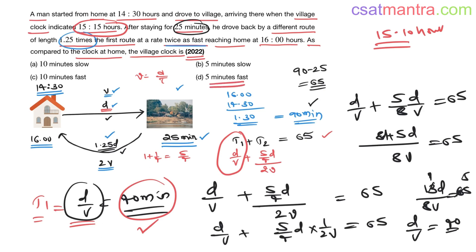Easy question. We know total time is 65 minutes, that is T1 plus T2. T1 is D by V, T2 is 5 by 8 D by V, and we found D by V as 40 minutes. That is time taken from home to village. When the home clock is 14:30 hours, you add 40 minutes to that, that would be 15:10 hours. As compared to the clock at home, the village clock is, it should be this should be the actual time, but village clock is 15:15 hours. That means 5 minutes fast.